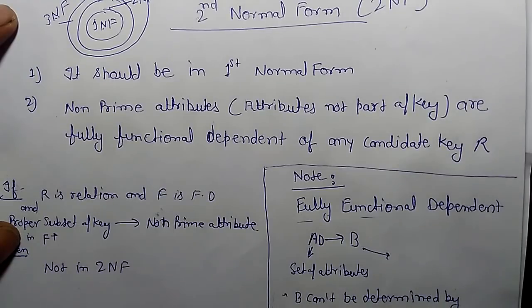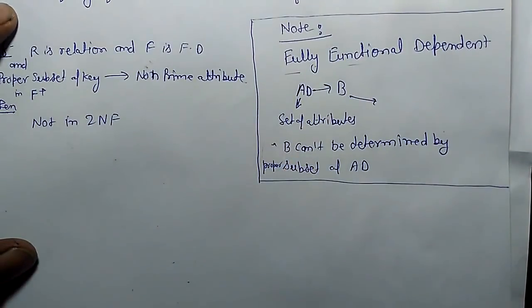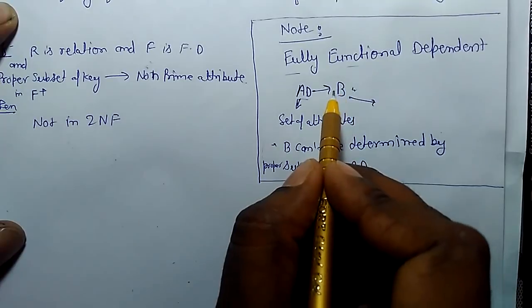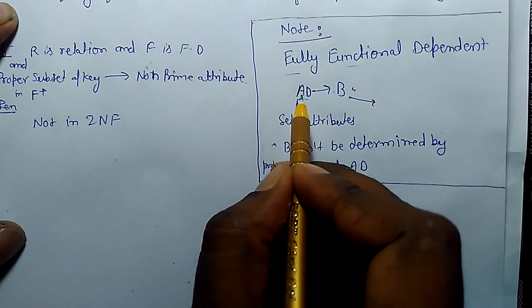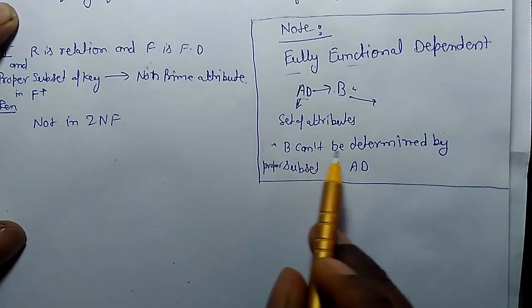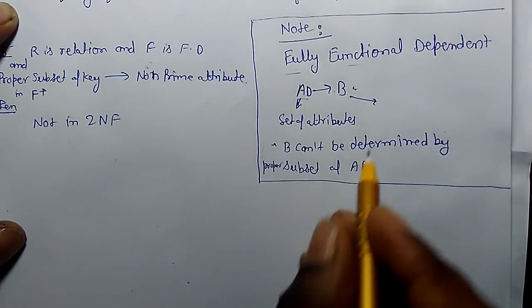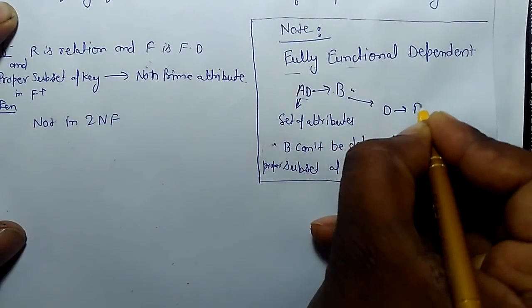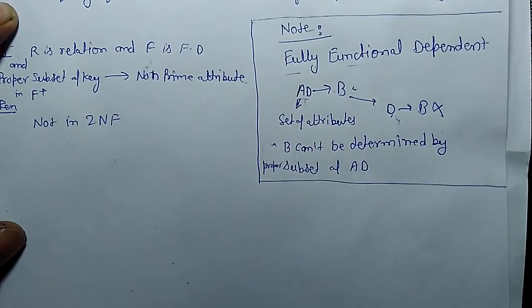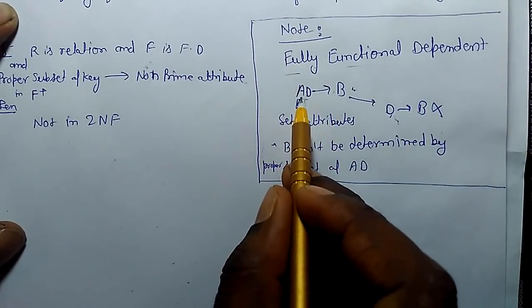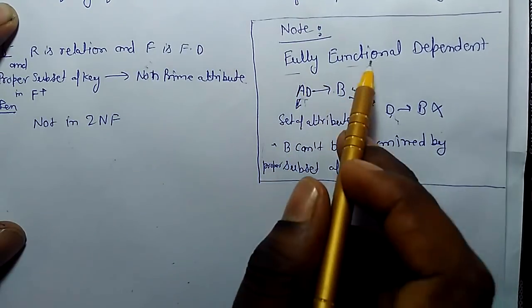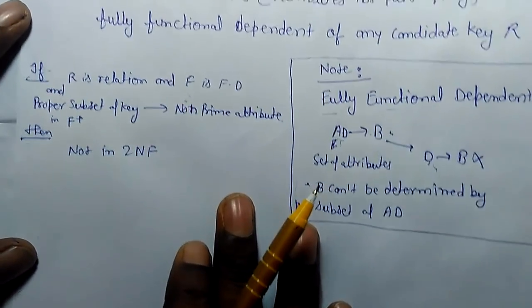What is the meaning of fully functional dependent? Fully functional dependent means: if AD derives B, then B is fully functionally dependent on AD only if no proper subset of AD derives B. B cannot be determined by a proper subset of AD. So a relation like D determines B should not exist, because D is a proper subset of AD. If no subset of the left side can determine the right side, then it is fully functionally dependent.